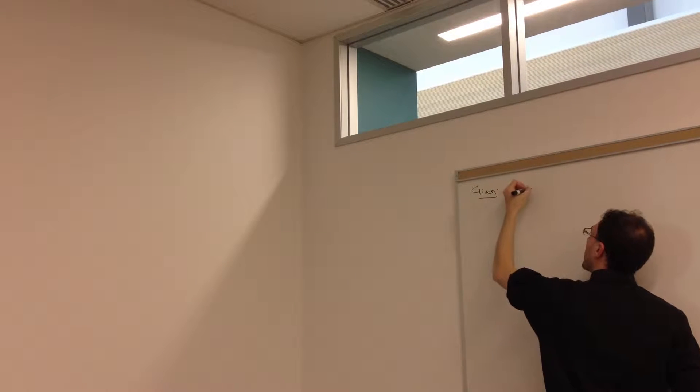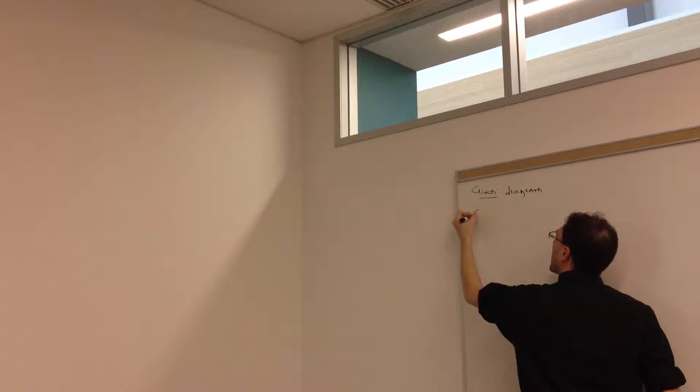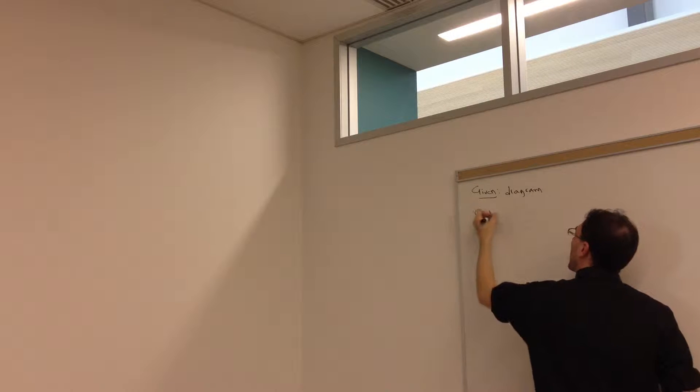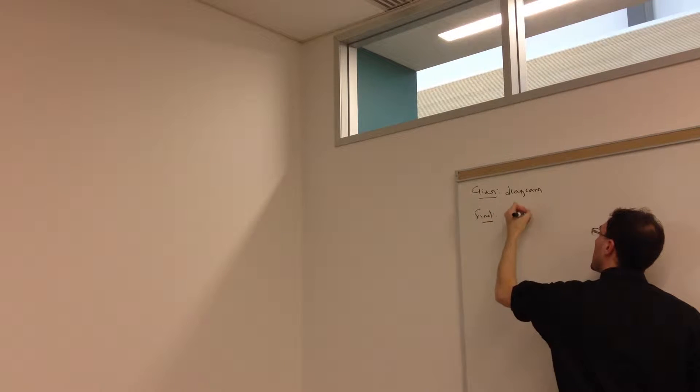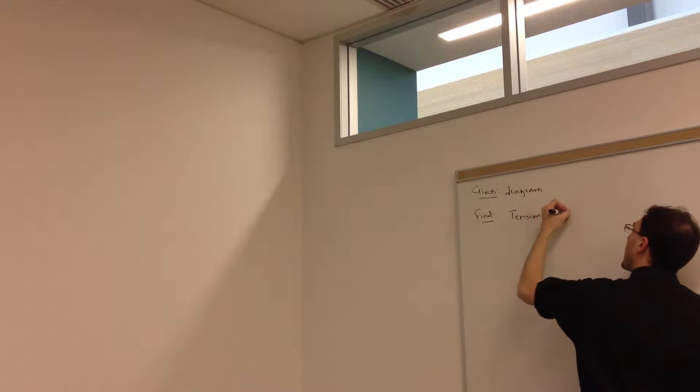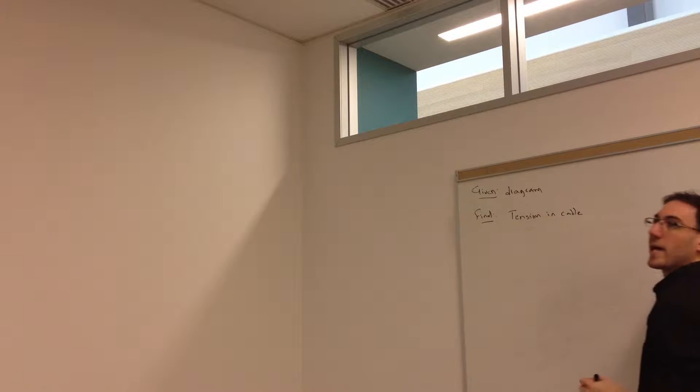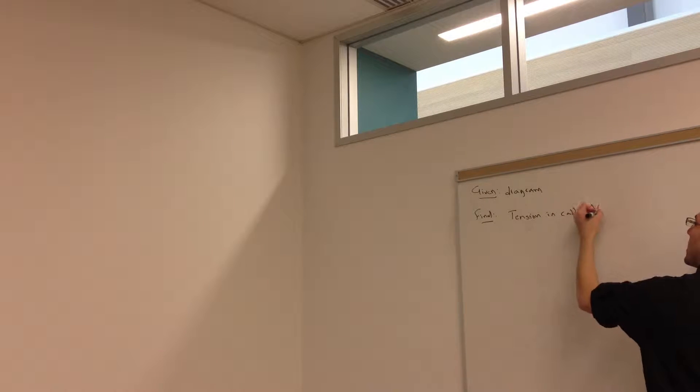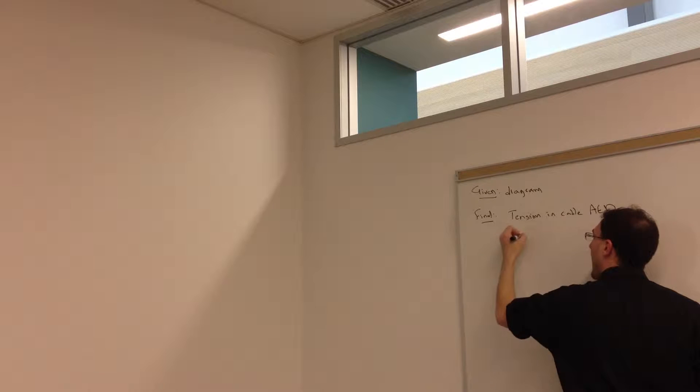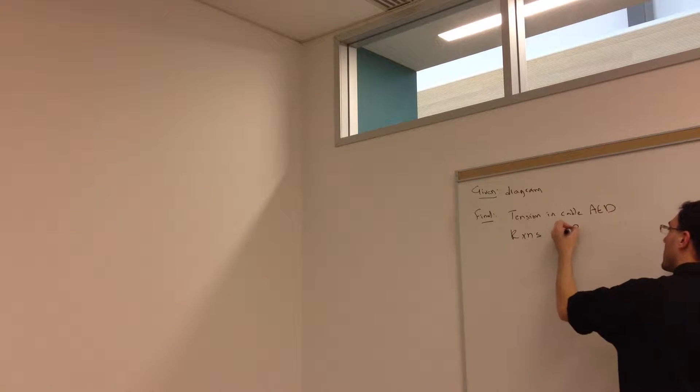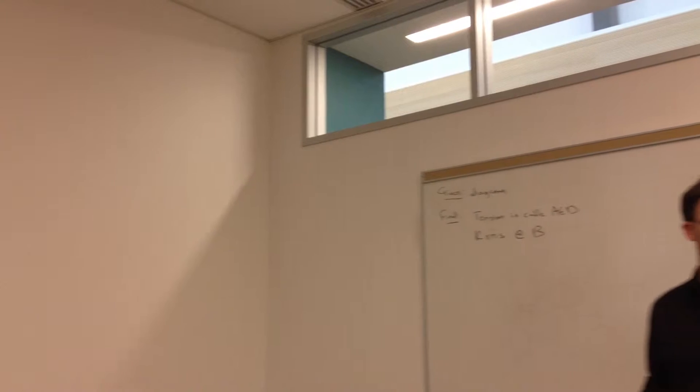Alright, so again, we're given the diagram, and we will find tension in cable AED and all reactions - that includes forces and couples at that square collar B.